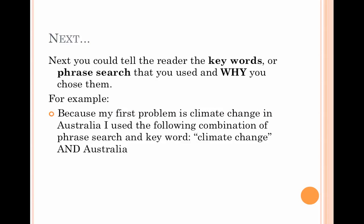This is a really important point: you need to tell your reader or marker what keywords you used to start your search. You might have used individual keywords or a phrase search, and you should explain why you chose those keywords. For example: because my first problem is climate change in Australia, I used the following combination of phrase search and keyword — 'climate change' AND 'Australia'. That search strategy uses a boolean operator and targets the specific phrase 'climate change' rather than, say, 'global warming'.